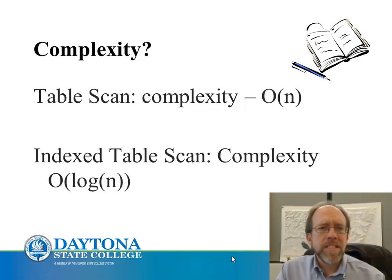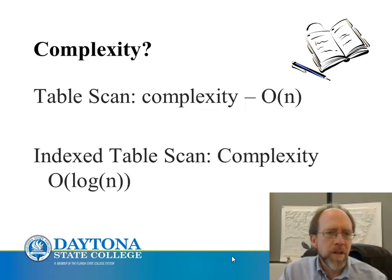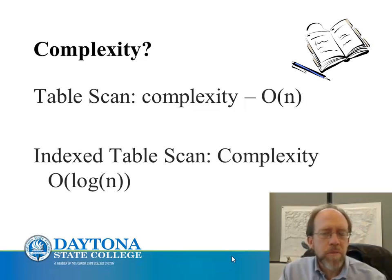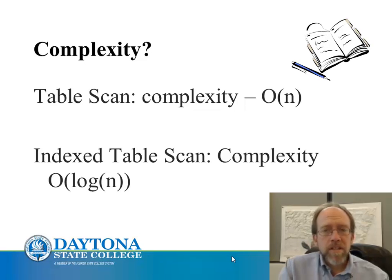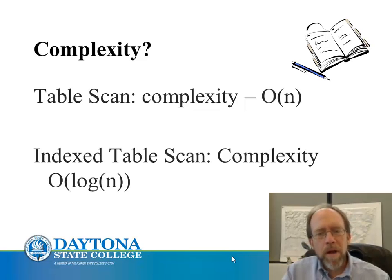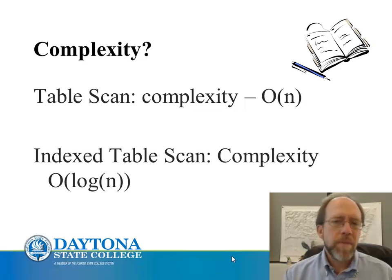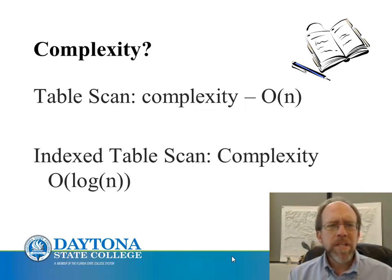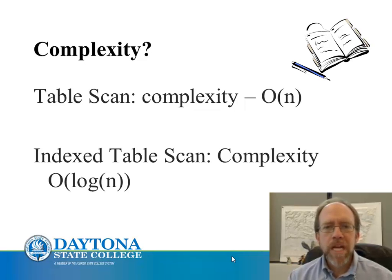Now let's talk a little bit about complexity. When you're dealing with something like a table scan, complexity is often referred to in what we call Big O notation. N would be the number of algorithmic steps — in a database, N refers to the number of rows in a table. Suppose you have to scan an entire table. Think of it like a phone book: you start with the A's and go one by one until you find the name you're looking for. On average you'll find it 50% of the way through, but in the worst case you scan all N rows, so a full table scan has complexity O(N).